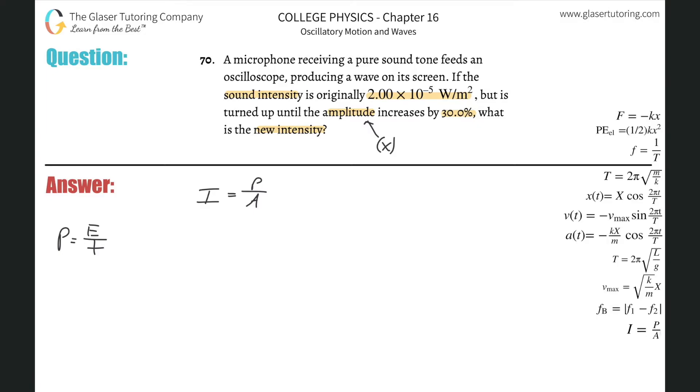We can reorganize that in other ways too, but this would be the most appropriate way to view power for this problem. So what I can do now is basically just substitute. Instead of power I can write energy per time, and it would be energy divided by time and then multiplied by the area on the bottom.